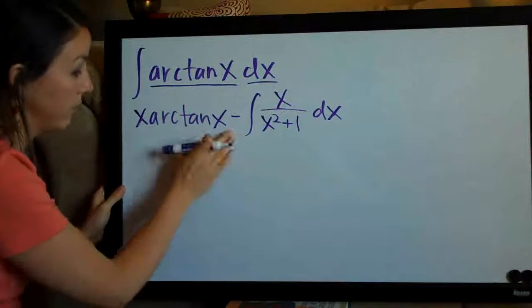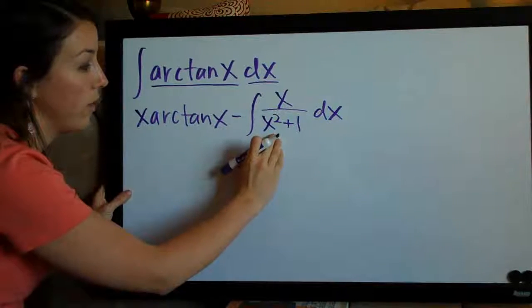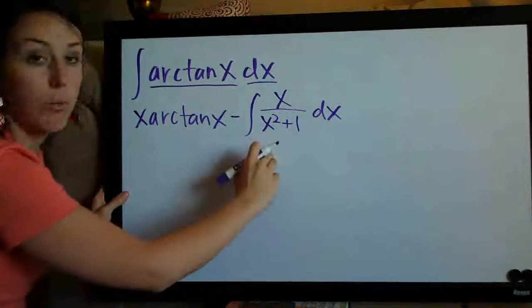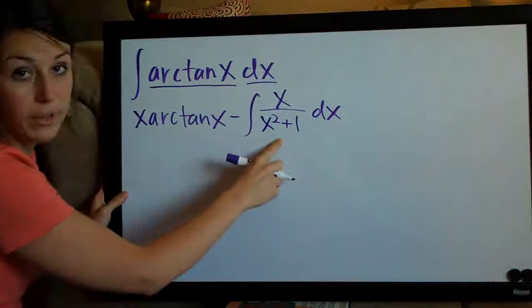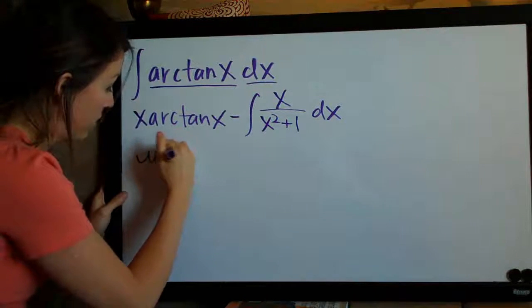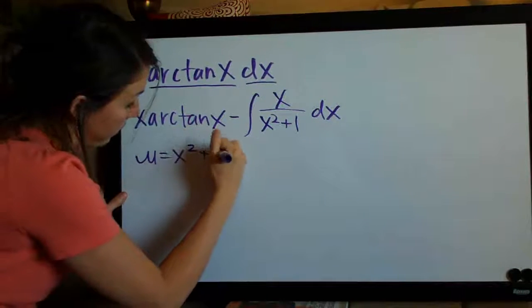So that's my first guess and we'll go ahead and try it. We're going to leave this alone for now and just focus on evaluating this integral with u-substitution. We'll assign u to the most complicated part, which is x squared plus one.